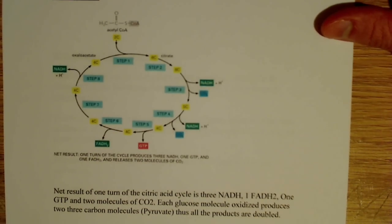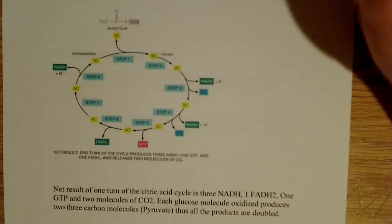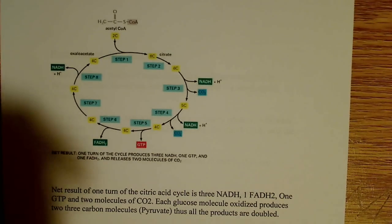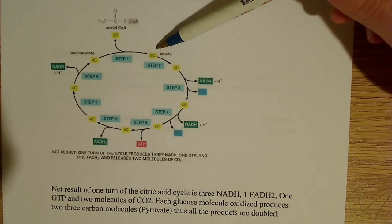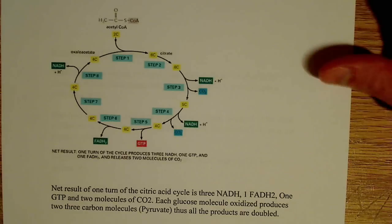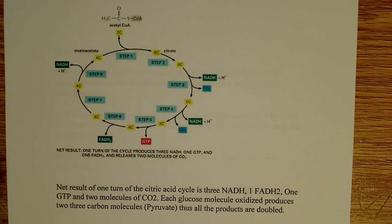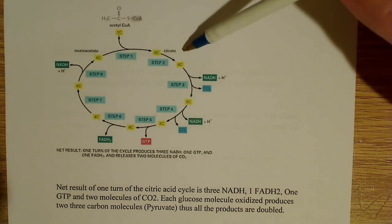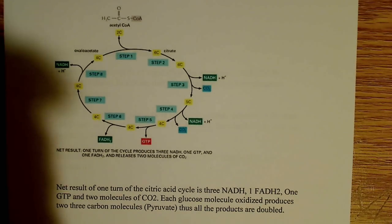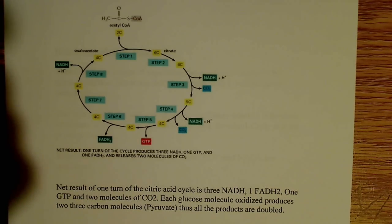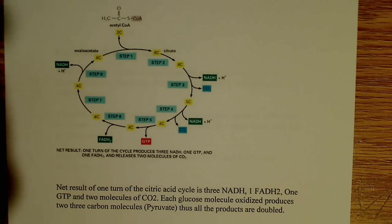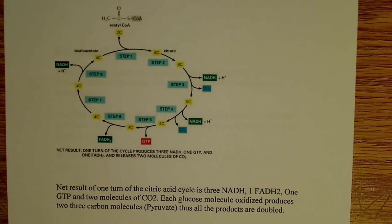What I have here is the classic citric acid cycle diagram. They start with an acetyl-CoA molecule here, and as we move through, we have a total of eight steps. Acetyl-CoA enters the cycle and is converted to citrate. That's done by an enzyme known as citrate synthase. So citrate synthase takes oxaloacetate plus acetyl-CoA and forms citrate.